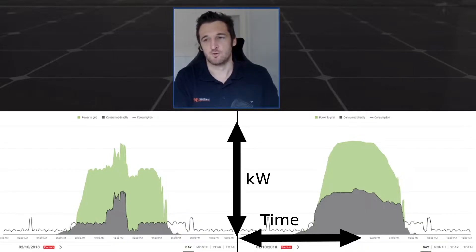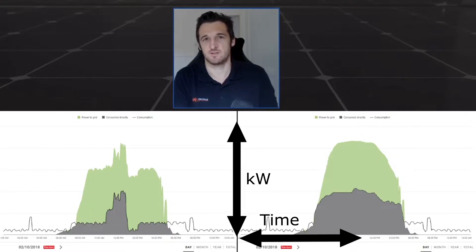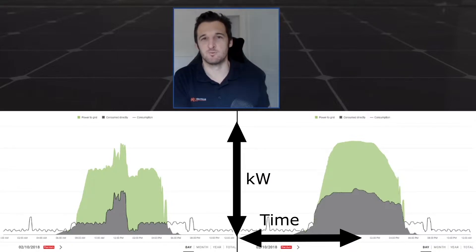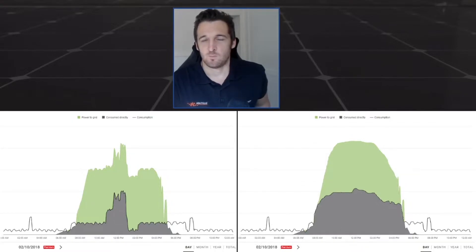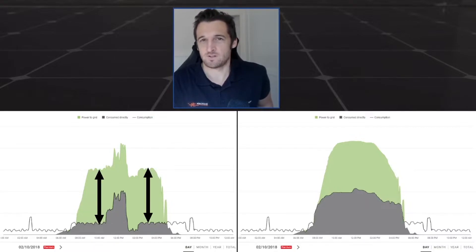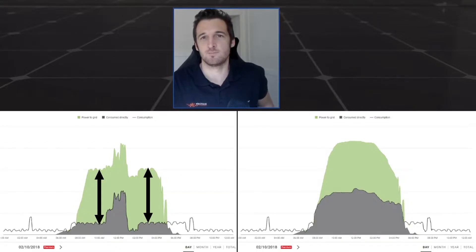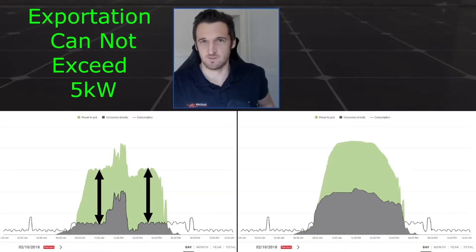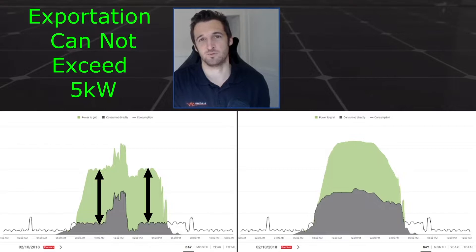For the color codes, the green portion is the amount being sent to the grid for a feed-in credit, and the gray filled-in section is what's being used by the household directly. You'll also notice an unfilled gray section which is being used by the household but bought from the grid because solar at these hours isn't functioning — it's night time. What export limiting is most concerned with is this green portion, the power to the grid. At any one time this amount can't exceed a certain amount. Referring back to the Energex guidelines, the most common amount is five kilowatts, meaning this green section can never be higher than five kilowatts even if your system wants to produce more.